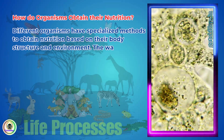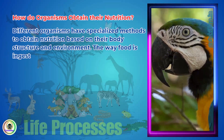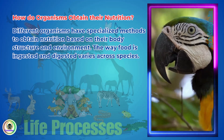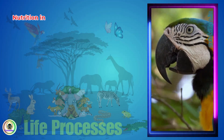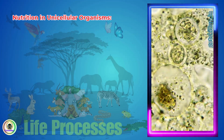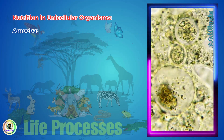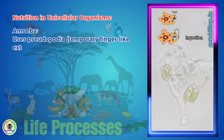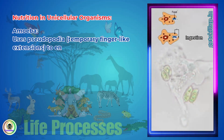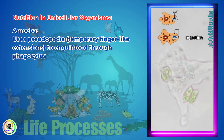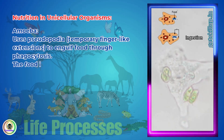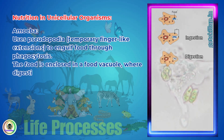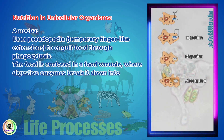Nutrition in unicellular organisms: Amoeba uses pseudopodia — temporary finger-like extensions — to engulf food through phagocytosis. The food is enclosed in a food vacuole, where digestive enzymes break it down into simpler substances.